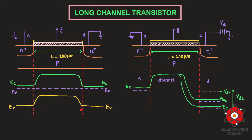I have drawn the conduction band and valence band diagrams for the long channel transistor with VD equal to zero first. For an n-type heavily doped source and drain region, the Fermi level lies closer to the conduction band. The p-type substrate in the n-channel transistor is not as heavily doped, so its Fermi level, though closer to the conduction band than midgap, is not as close as that of the source and drain regions.